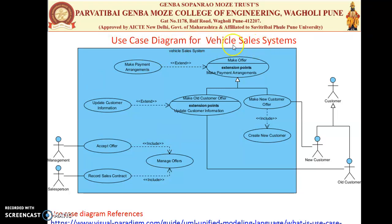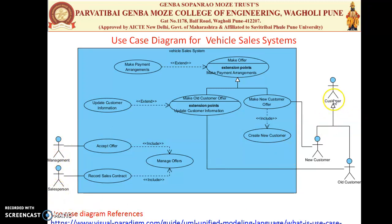The next diagram is also a Use Case diagram but for a different system — the Vehicle Sales System. Here we can see three actors: the Manager, the Sales Person, and the Customer. The Customer is a generalization of the New Customer and the Old Customer.